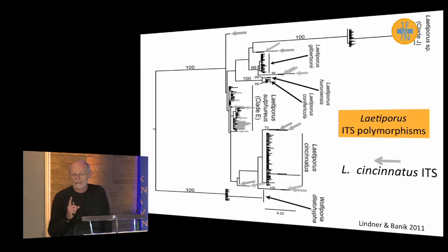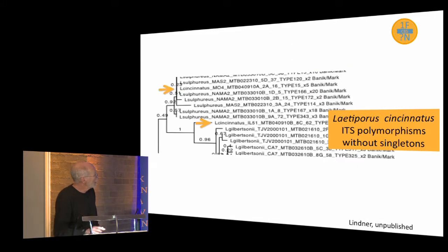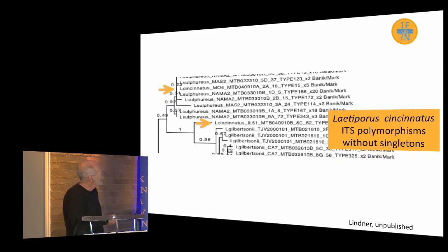There's a nice recent paper by Lindner and Bannock on Laetiporus. In a tree of seven Laetiporus species using the consensus sequence, when they looked at the deep reads, there are a number of sequences from a specimen of Cincinnatus found all over the tree — polymorphism in the ITS in one species. Lindner threw out all the singletons and repeated the study. You can see that in Sulphureus there are sequences that came from Cincinnatus that are just like Sulphureus, and another from Cincinnatus basal to Gilbertsonii. Cincinnatus is promiscuous.